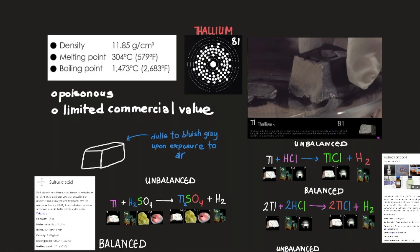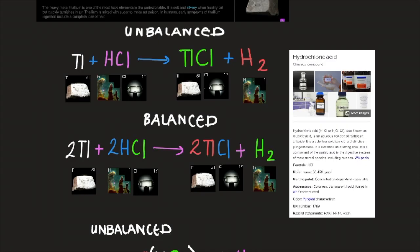Like lead, thallium is a soft, low-melting element of low tensile strength. Freshly cut thallium has a metallic luster that dulls to bluish gray upon exposure to air. The metal continues to oxidize upon prolonged contact with air, generating a heavy non-protective oxide crust.